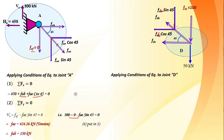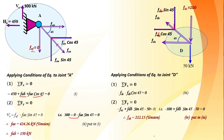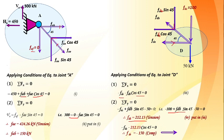Drawing the free body diagram of joint B: the inclined force FDB is resolved into FDB × cos45 and FDB × sin45. Applying sigma Fy at joint B: -100 - FBE - FDB × sin45 = 0. Substituting known FDB = 212.13 and solving, FBE = -250 kN. The negative sign means FBE is compressive, not tensile as assumed.